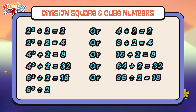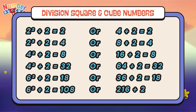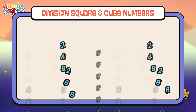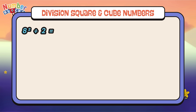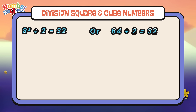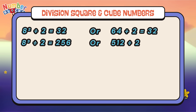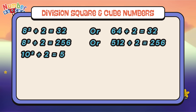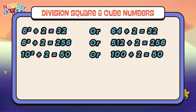6 cubed divided by 2 is equals to 108, or 216 divided by 2 is equals to 108. 8 squared divided by 2 is equals to 32, or 64 divided by 2 is equals to 32. 8 cubed divided by 2 is equals to 256, or 512 divided by 2 is equals to 256. 10 squared divided by 2 is equals to 50, or 100 divided by 2 is equals to 50. 10 cubed divided by 2 is equals to 500, or 1000 divided by 2 is equals to 500.